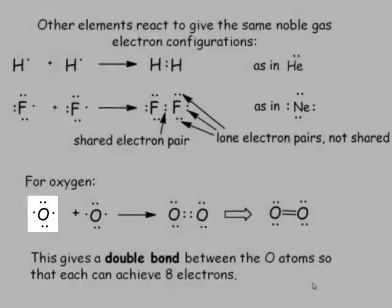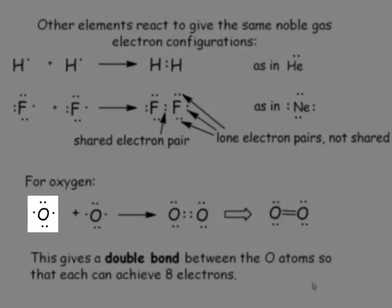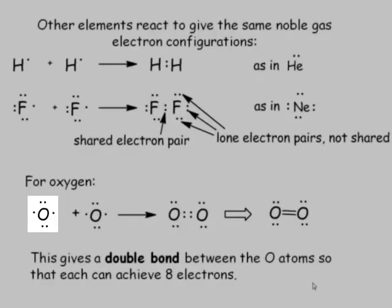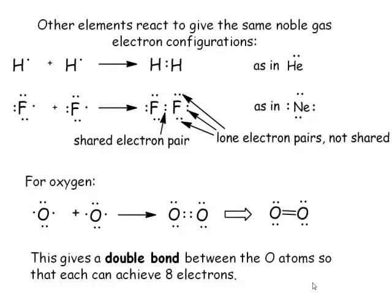Now let's take oxygen. Oxygen is in group 16 and has six valence electrons. Two species coming together with six valence electrons — it can form one bond by sharing one electron from each of the atoms. That will form a single bond, but there will then only be seven electrons around oxygen.